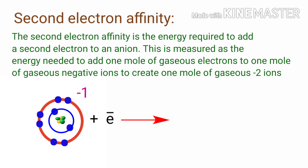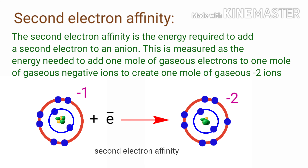The second electron affinity is the energy required to add a second electron to an anion. It is measured as the energy needed to add one mole of gaseous electrons to one mole of gaseous negative ions to create one mole of gaseous minus-two ions. The second electron affinity is a positive value, as energy is needed to add a second electron to an ion with a pre-existing negative charge. This negative charge repels the incoming electron, making the process endothermic and requiring energy input.